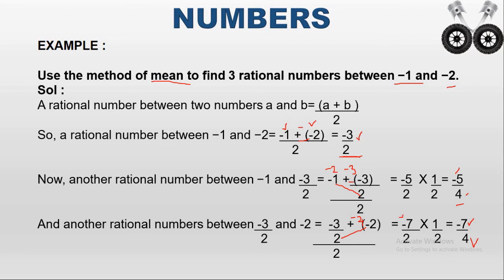So the three in-between rational numbers between minus one and minus two are minus three by two, minus five by four, and minus seven by four. These three rational numbers lie between minus one and minus two.